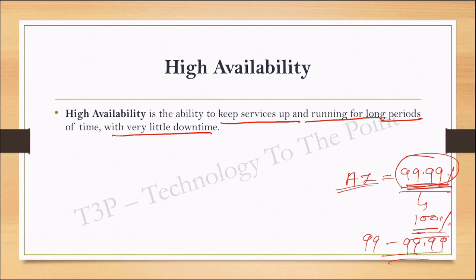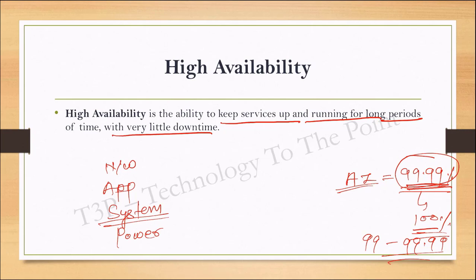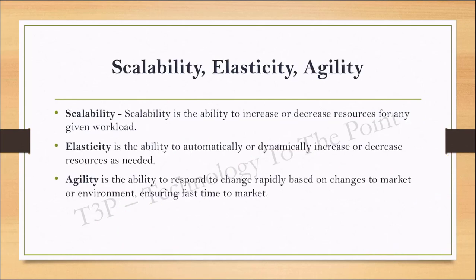There are many factors that can reduce availability: network outages, application failures, system downtime where the application is hosted, power outages, natural disasters, hardware issues, software issues, and licensing issues. Despite all these factors, Azure still provides an uptime SLA of 99.99% — that is what high availability means.